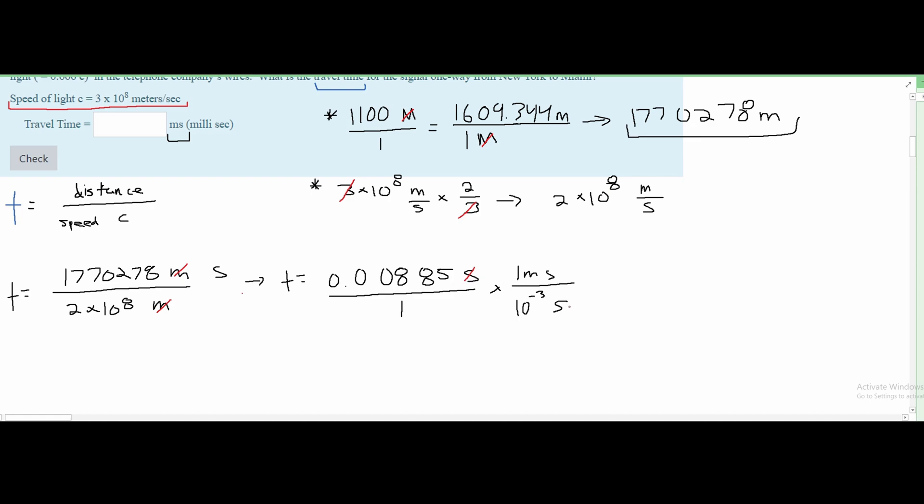We can get rid of this 10^-3 by just moving the decimal spot over 1, 2, 3 times. When we're multiplying by 10^-3, we're technically dividing right now. But if we want to multiply to make things easier, we flip this to the top so it becomes 10^3. Then we have to move the decimal 3 places to the positive side, which is why we move it 1, 2, 3 times. This gives us the answer of t equals 8.85 milliseconds.